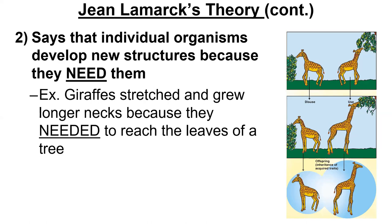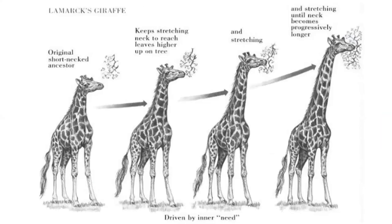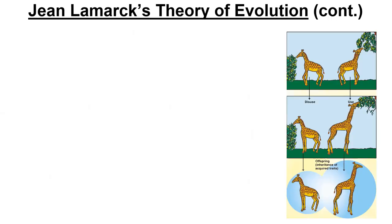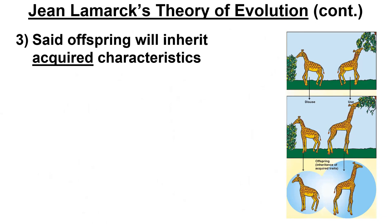So that part of his theory is wrong. We know now why you get your traits — it's based on genes, and sometimes mutated or changed genes. Lamarck said that you could acquire a characteristic and then pass it on to your offspring, which we know is not the case.